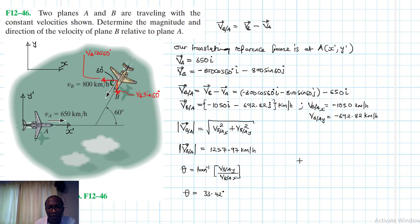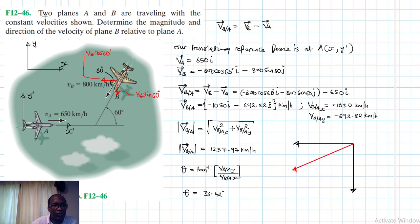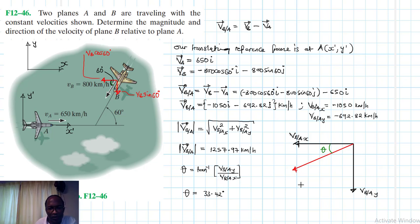Both components are negative, so we draw one vector in the negative x-direction and one in the negative y-direction. The resultant VB/A is closer to the larger value. VB/A_x, VB/A_y, and the resultant VB/A form a vector diagram with the angle between them.